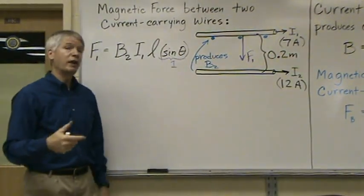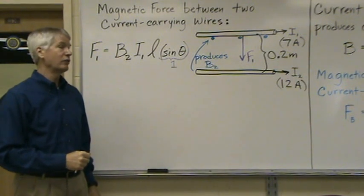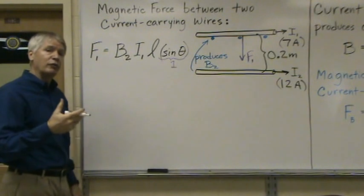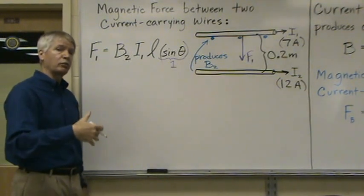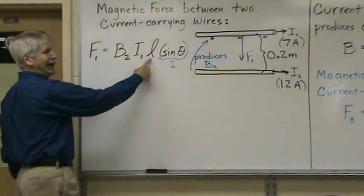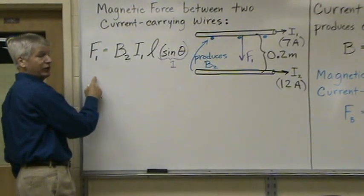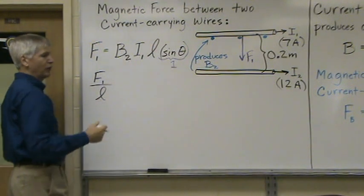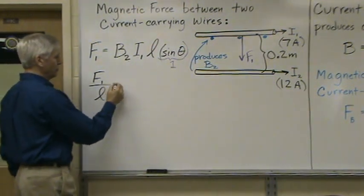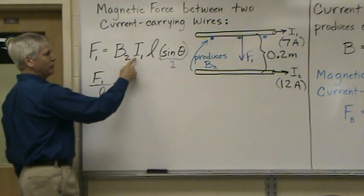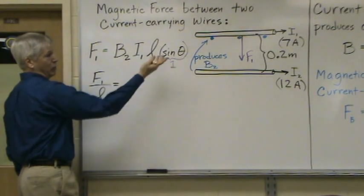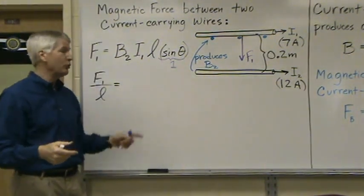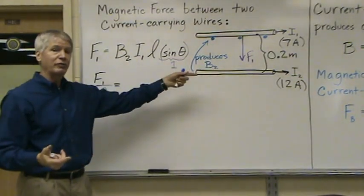So now we have what we need to find the value of that force acting on wire 1. We're going to find the force per length, per unit length. So we're going to bring the L, the length, over to this side of the equation and write it this way. So force 1 per unit length in meters equals B2 times I1 times 1.